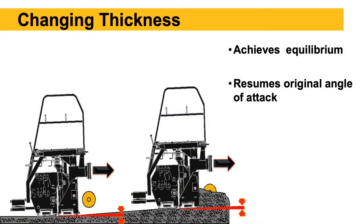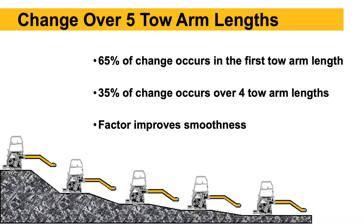This slide shows the sequence: paving along at an original quarter-inch angle of attack, we change depth screws, the mat gets thicker as we pave, then it comes back to equilibrium at that same quarter-inch original angle of attack. If we do this manually using the depth control screws without automatic grade control, it takes five toe arm lengths — basically five lengths of the paver — for the full thickness change to happen and for the screed to come back to equilibrium at the new mat thickness.